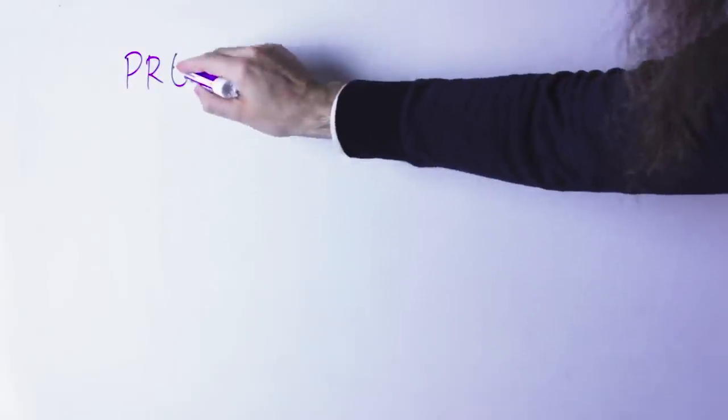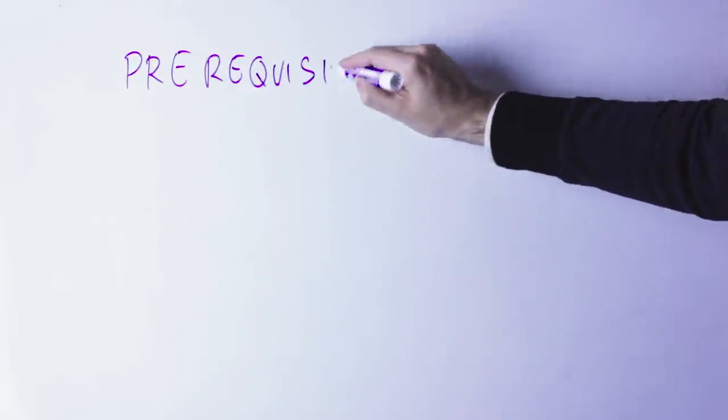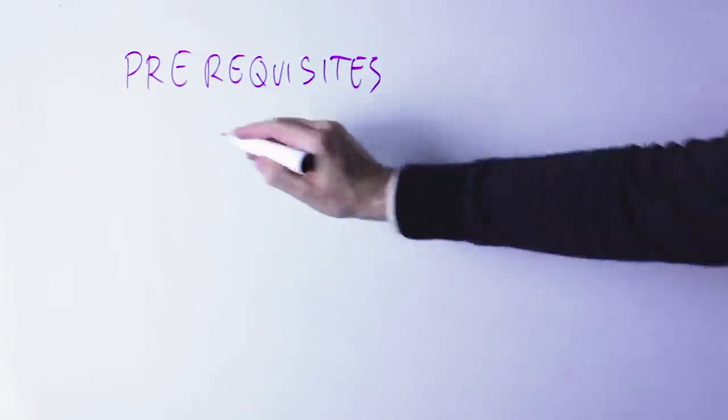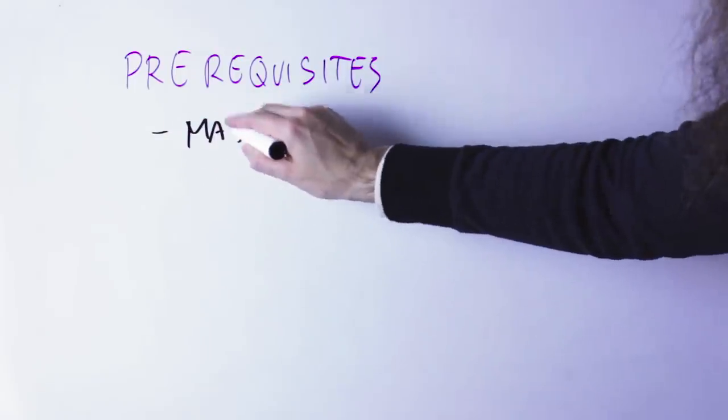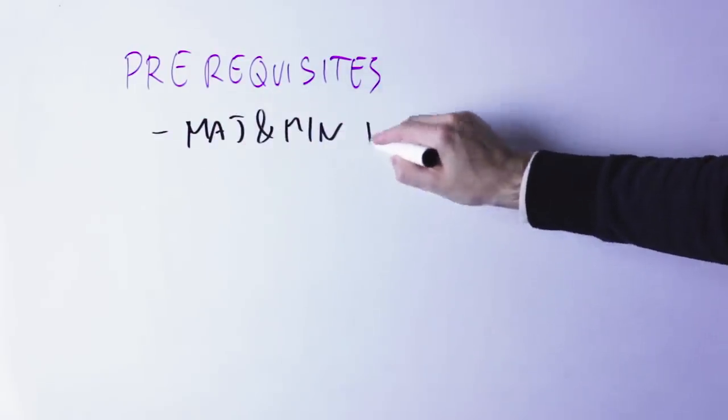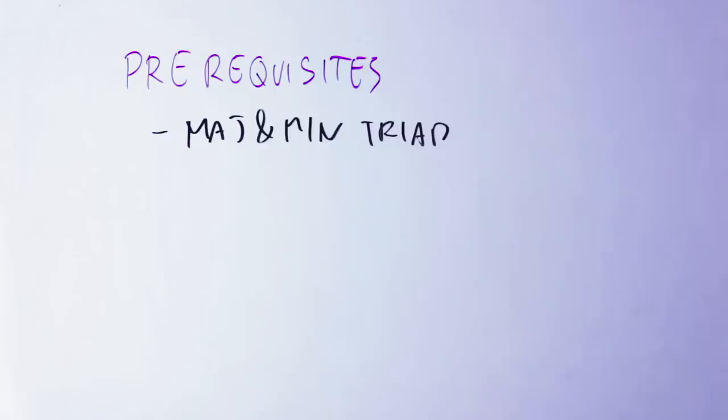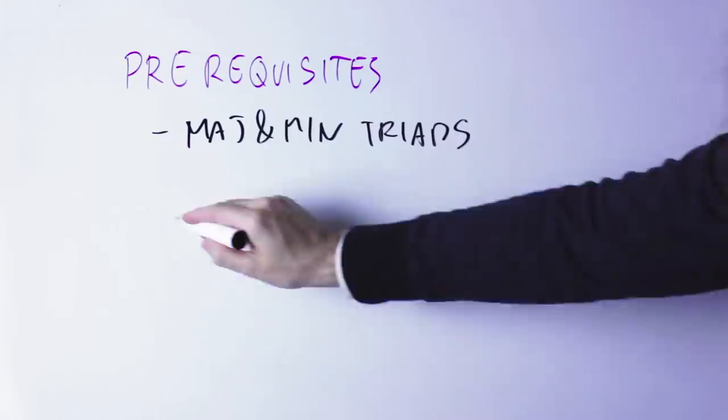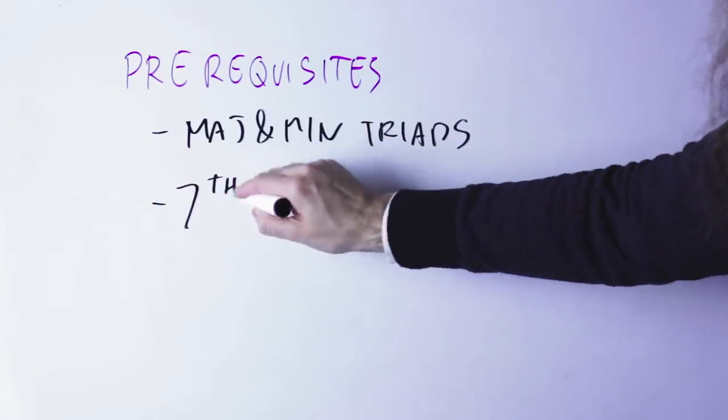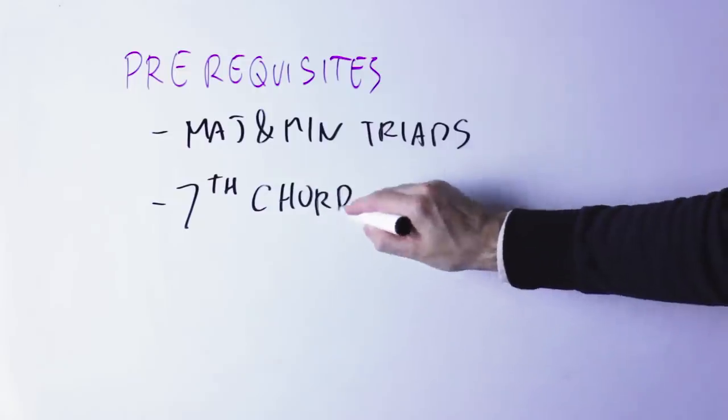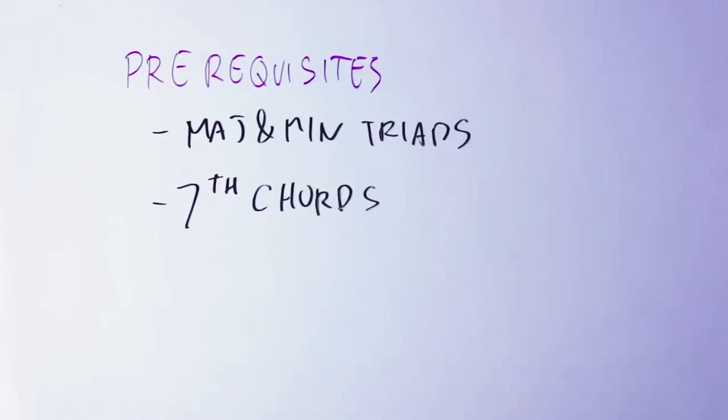Before we start, to understand this video you need to know how to build major and minor triads. If you do not know how to do it, have a look at the Super Basics of Music Theory video that is linked on the top right. You need to know how to build the seventh chords, and if you do not know how to do that, have a look at the seventh chord video, always on the top right.